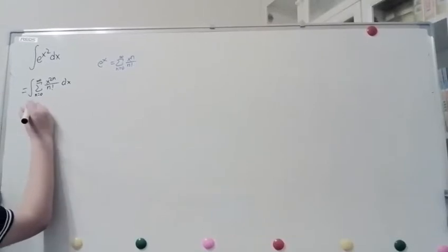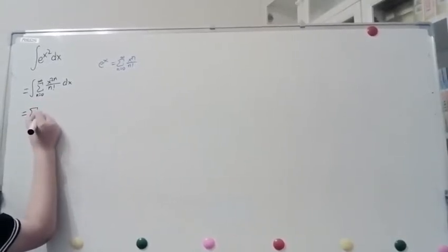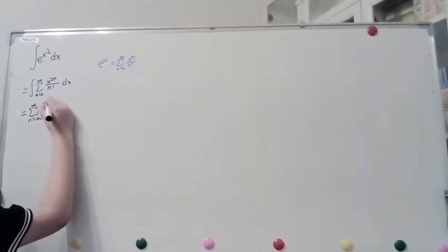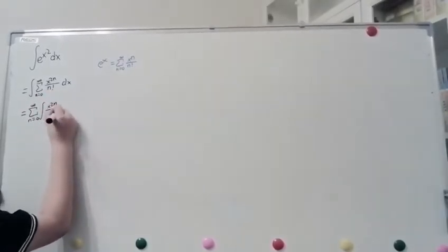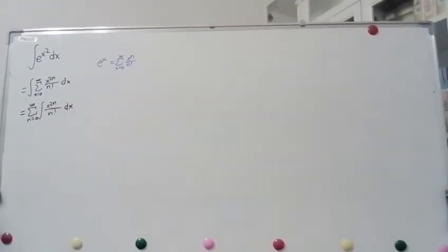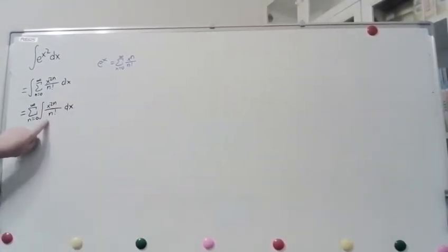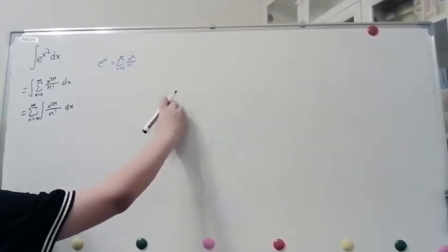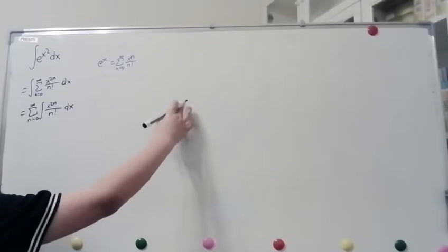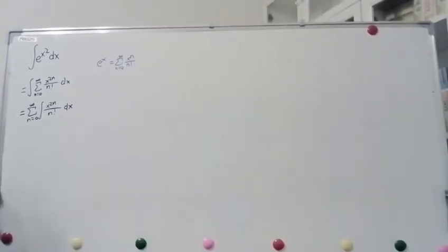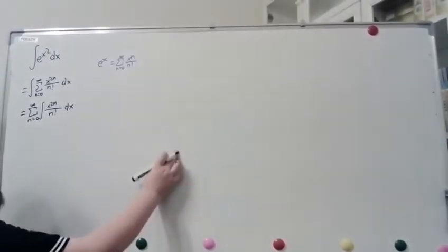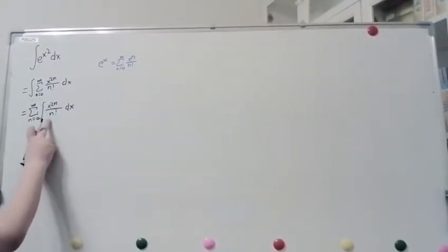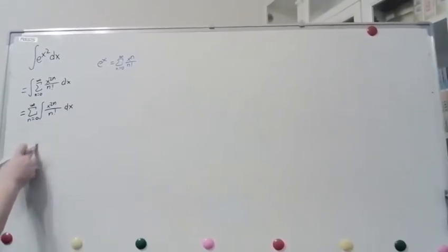So, we have equals the sum n equals 0 to infinity of the integral of x to the 2n over n factorial dx. Now, this n factorial, before we expand it like x squared over 1 factorial, and then plus x to the 4th over 2 factorial, this 1 over n factorial is just a constant, so we move that out.